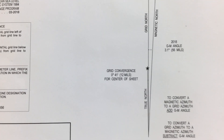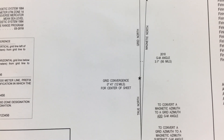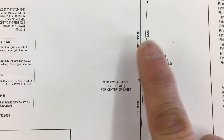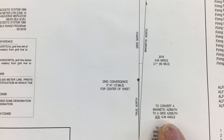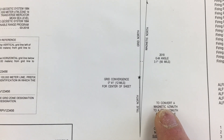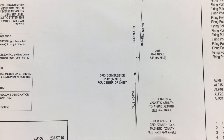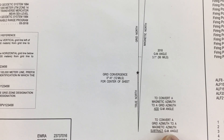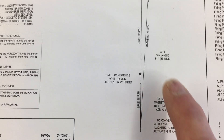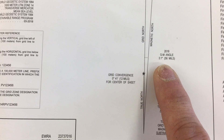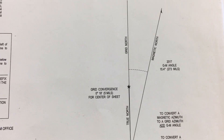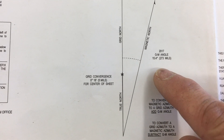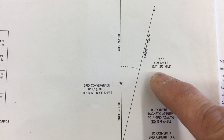Probably one of the most important pieces of information on a map is the declination diagram. The declination diagram shows the difference in the relationship between grid north and magnetic north — this is called the GM angle, or grid-to-magnetic angle. Every map tells us how to convert from magnetic to grid or grid to magnetic. On this Texas map, the difference is 3.1 degrees. On the Washington State map, the GM angle is 15.4 degrees.